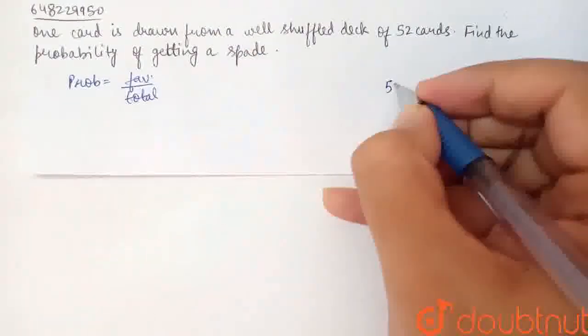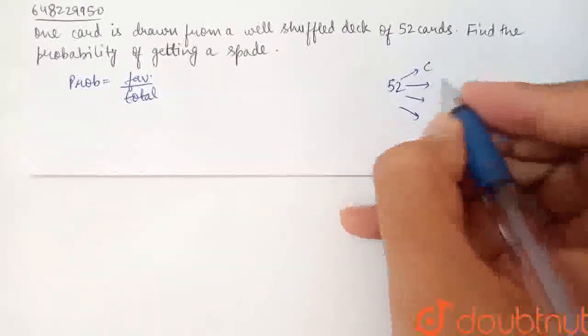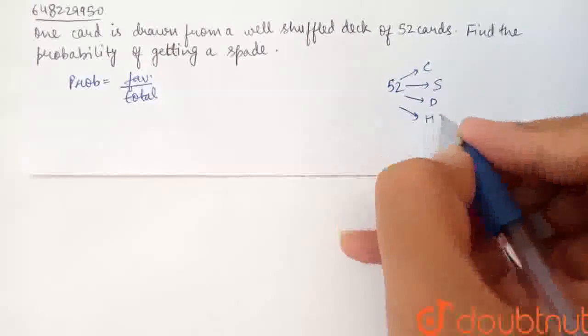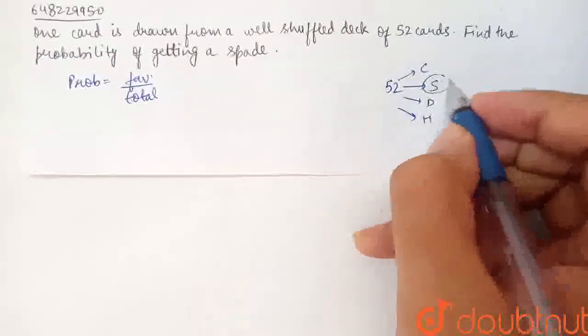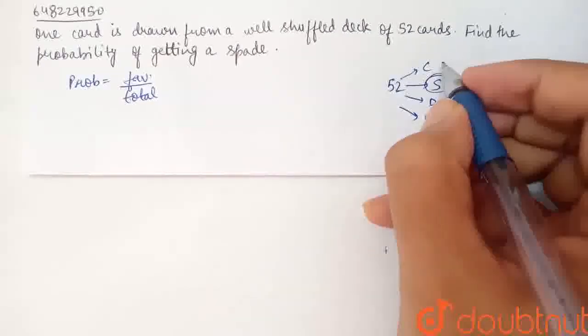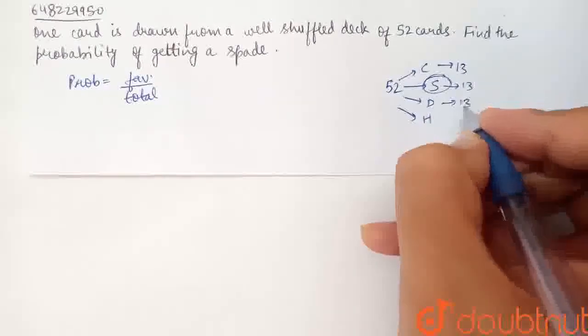If we have 52 cards in a deck, then we have 4 suits: Club, Spade, Diamond, Heart. Now, we have to find the probability of getting a spade. All cards are equal in numbers - 13 each.